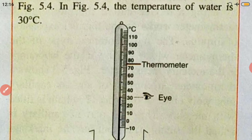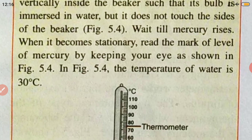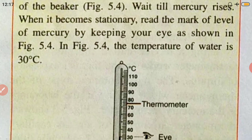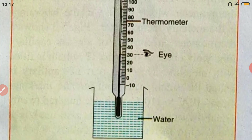Here you can see water taken in a beaker with the thermometer placed vertically inside, such that its bulb is immersed in water but does not touch the sides of the beaker — if it touches the sides it will not give the correct reading. Wait till mercury rises; when it becomes stationary, read the mark at the level of mercury as shown in figure 5.4. In figure 5.4 the temperature of water is 30 degree Celsius, and you can see the bulb is not touching the sides of the container.